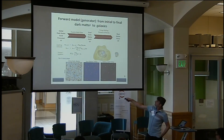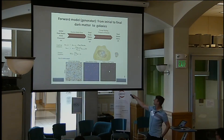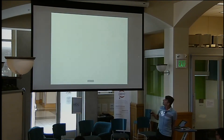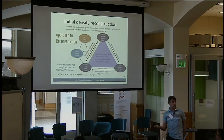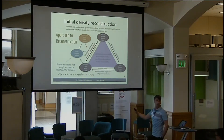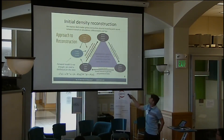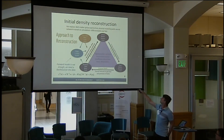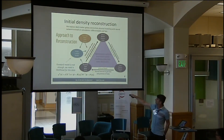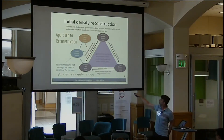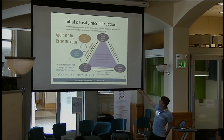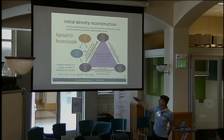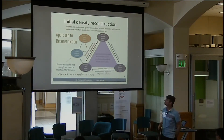The basic idea: Gaussian field → nonlinear dark matter field → galaxy light today. This is what we observe. The problem we want to solve is the inverse problem: we have the galaxy light today and we want to reconstruct the initial conditions. Think of the forward direction as the simulation and N-body pipeline. We want to go backwards — starting from the loss function, we want to reconstruct the initial conditions.